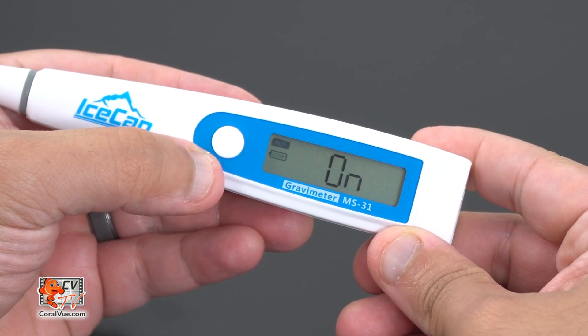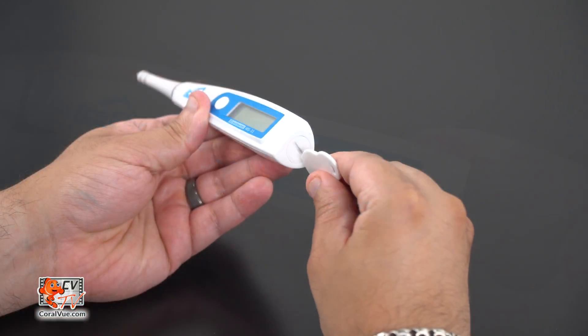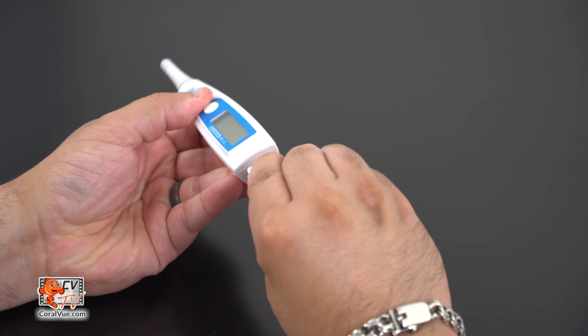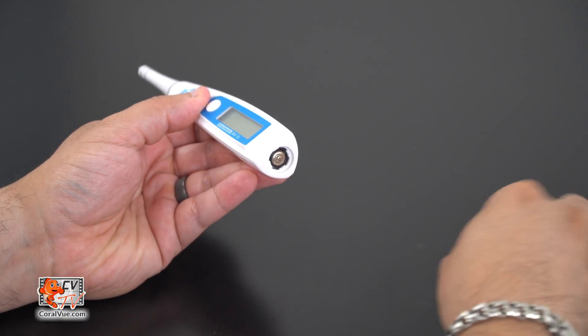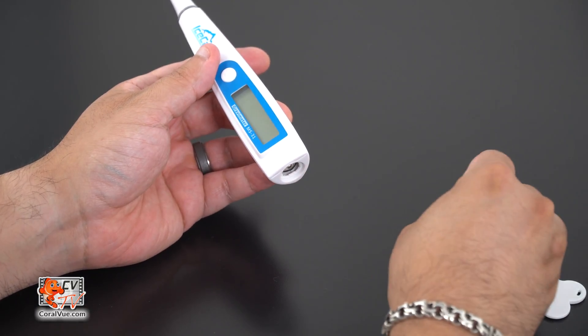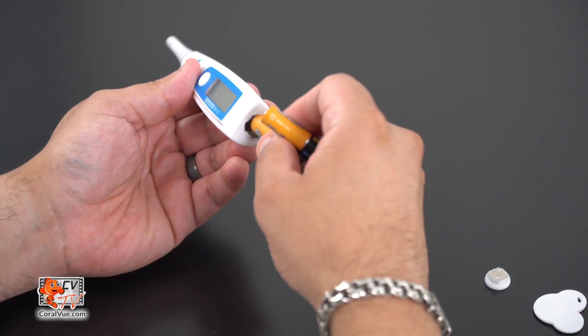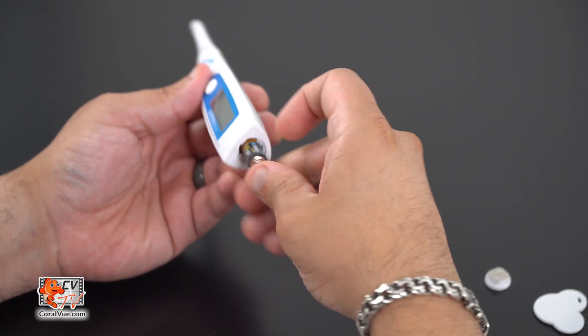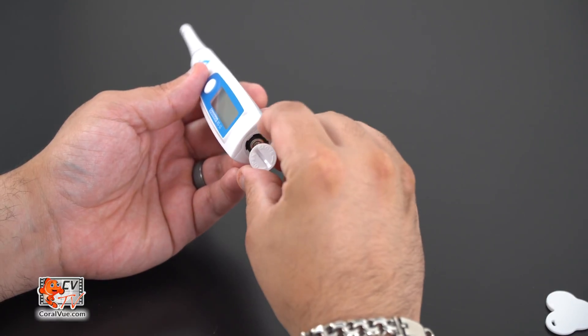If new batteries are needed, simply remove the lid at the end of the pen by using a flathead screwdriver or the included key. Gently tap the pen slightly to dislodge both batteries from the pen and replace them with a fresh set of AAA batteries. Make sure the batteries are reinstalled in the correct orientation.